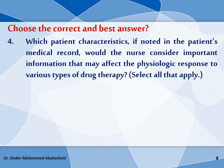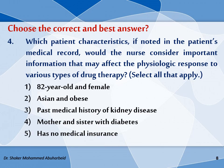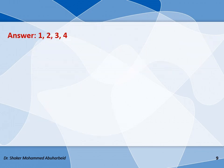Question 4: which patient characteristics, if noted in the patient's medical record, would the nurse consider important information that may affect the physiological response to drug therapy? Select all that apply. Option 1: patient is 22 years old and female. Option 2: Asian and obese. Option 3: past medical history of kidney disease. Option 4: mother and sister with diabetes. Option 5: has no medical insurance. The correct answers are options 1, 2, 3, and 4.